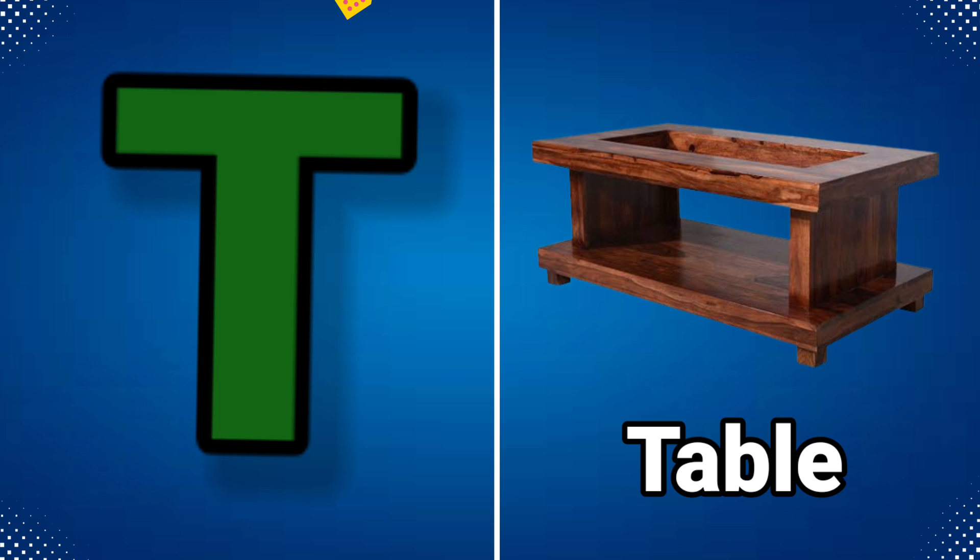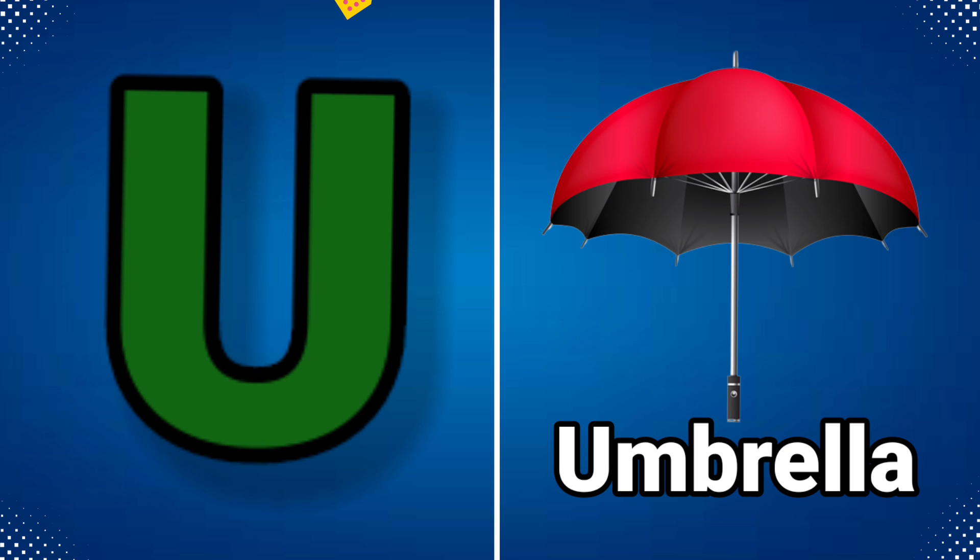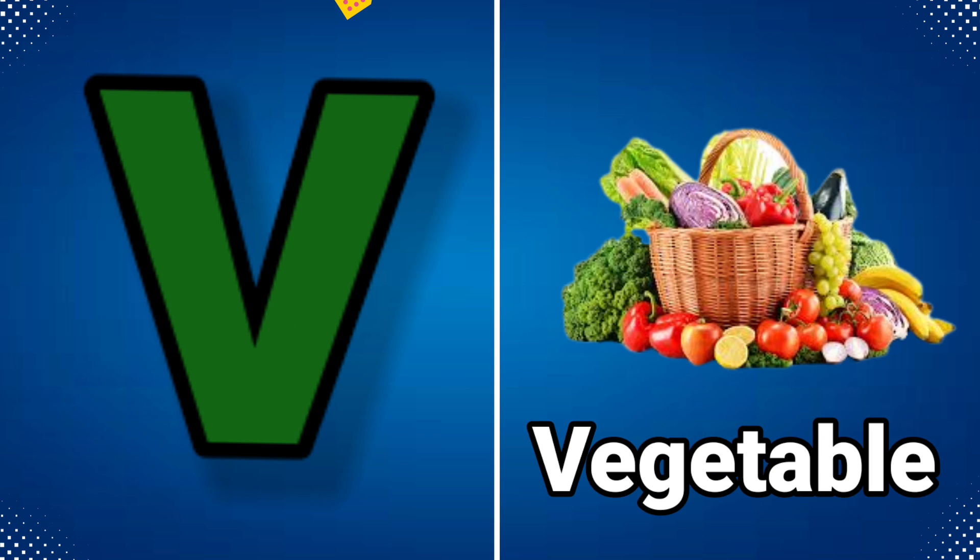T for table, U for umbrella, V for vegetable.